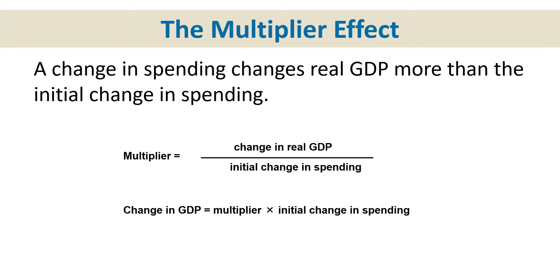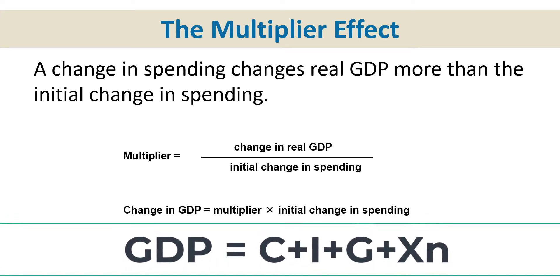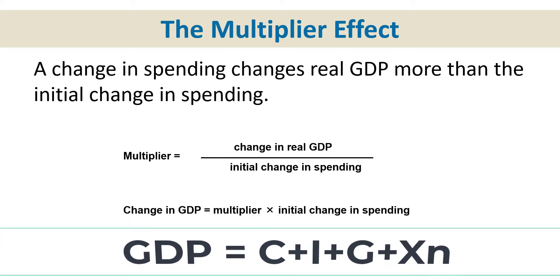I'll give you a simple example to help wrap your mind around it. When I say we have an injection in the economy, think of the components of GDP: C plus I plus G plus XN. If we increase one of these components — say consumption goes up, or businesses invest more, or the government spends more — we expect GDP to increase. The multiplier, however, is telling you it's going to change by more than the initial amount.